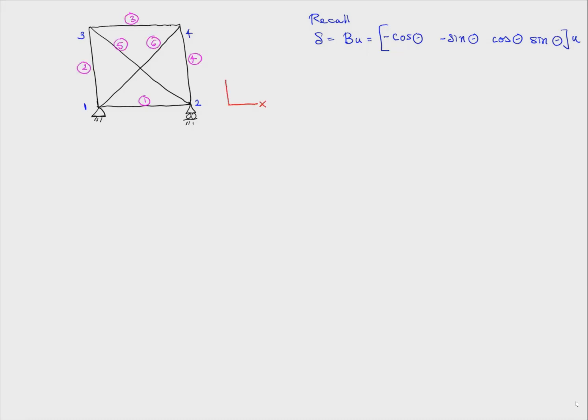And let's mark all the displacements that are free to occur: u2x, u3x, u3y, u4x, u4y. Notice that 1 is fixed, and u2y is not free. So these are called the degrees of freedom. These are the displacements that are free to occur.